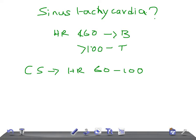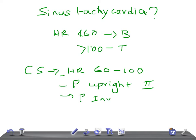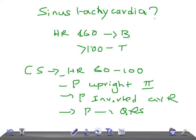But heart rate is not the only requirement. The P wave should be upright in lead II, and the P wave should be inverted in lead aVR. Additionally, every P wave should be followed by a QRS complex. If it fulfills all four of these criteria, then the rhythm is a normal cardiac sinus rhythm.